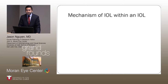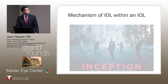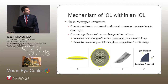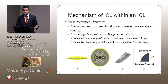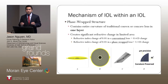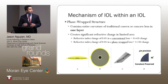So how did they create this IOL within an IOL? By utilizing what's called a phase-wrap structure. A phase-wrap structure essentially creates concentric diffractive zones. Within these diffractive zones, each zone has an individual power, and the summation of each of those rings comes to a total IOL power. That's how they affect the diopter change.